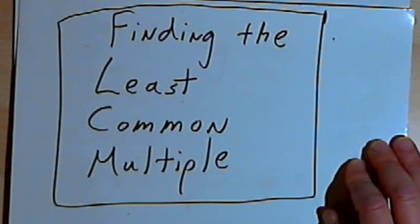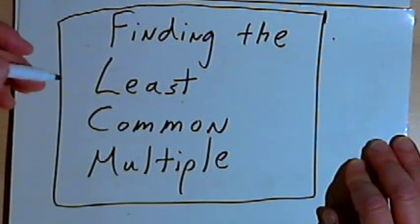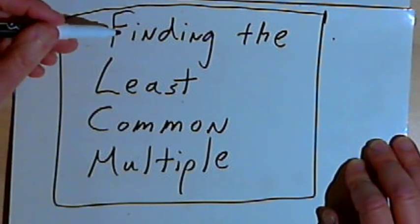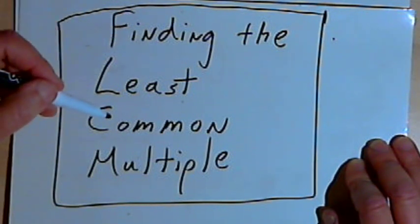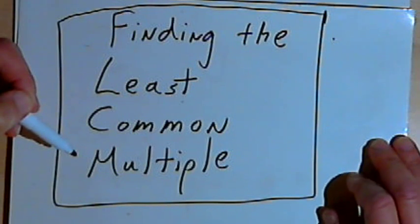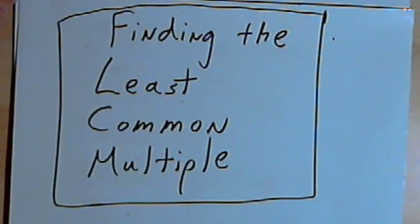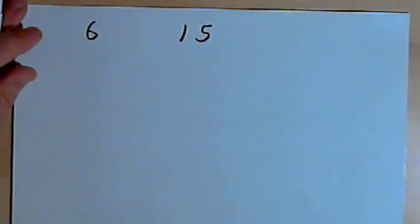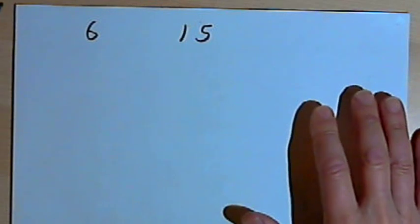This video is provided as supplementary material for courses taught at Howard Community College. In this video I'm going to talk about finding the least common multiple of two numbers. So let's start with the numbers 6 and 15 and try to understand what this is about.